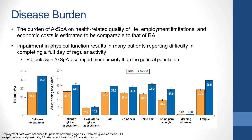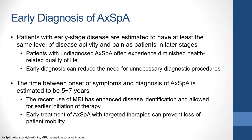In addition to physical impacts, patients with axial SPA also report more anxiety than the general population and may experience changes in mood, personality, self-perceptions, and a feeling of being stigmatized that can lead to withdrawal from social situations. Early and accurate diagnosis of axial SPA is critical because patients with early-stage disease are estimated to have at least the same level of disease activity and pain as patients in the later stage of disease.